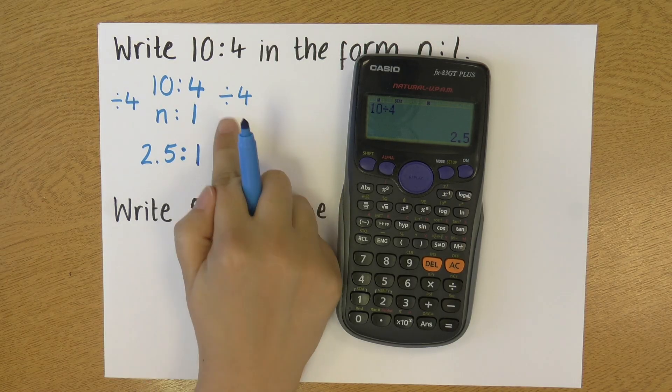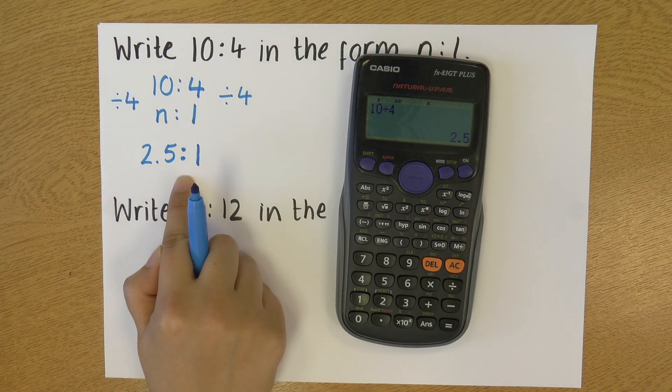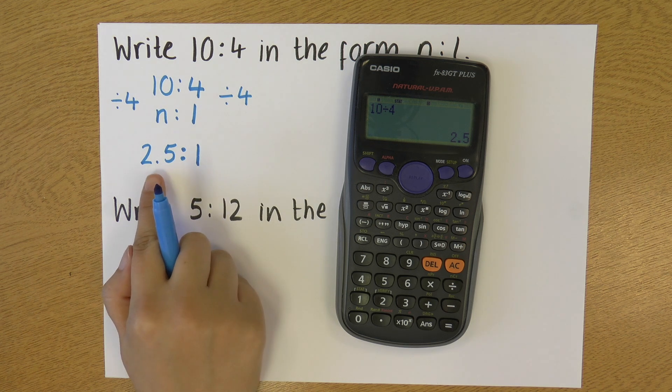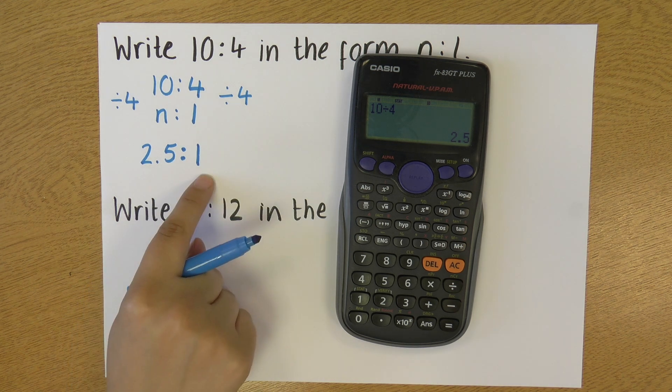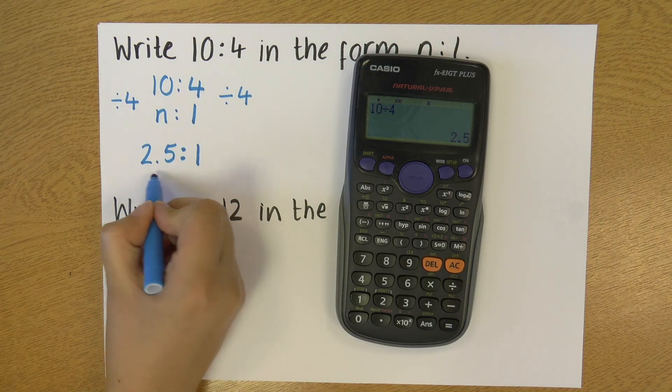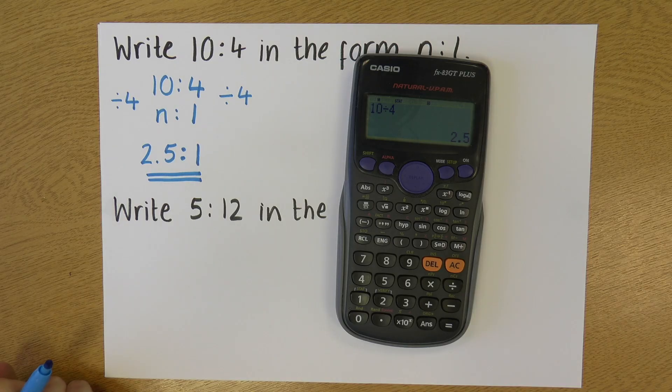That's why I've set it up in this way, to give me 1 on the right hand side. You can now see that I've got a ratio in the format n to 1, where n is just a number.